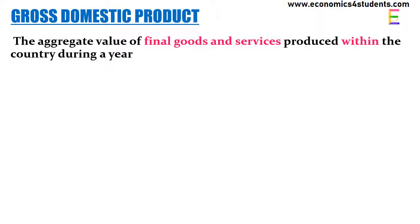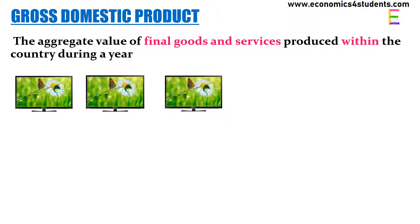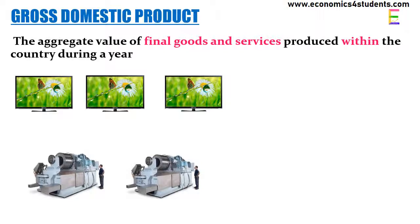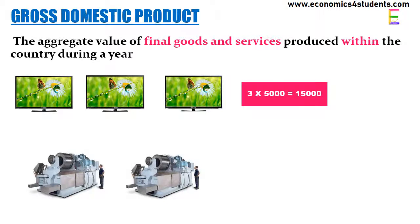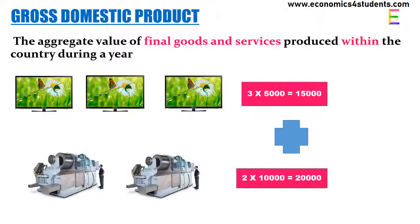Gross domestic product, that is GDP, is the aggregate value of final goods and services produced within the country during a year. For example, India is producing domestically three televisions each costing 5,000 rupees and two machines each costing 10,000 rupees. So the total value is 3×5,000 plus 2×10,000, therefore GDP is rupees 35,000.